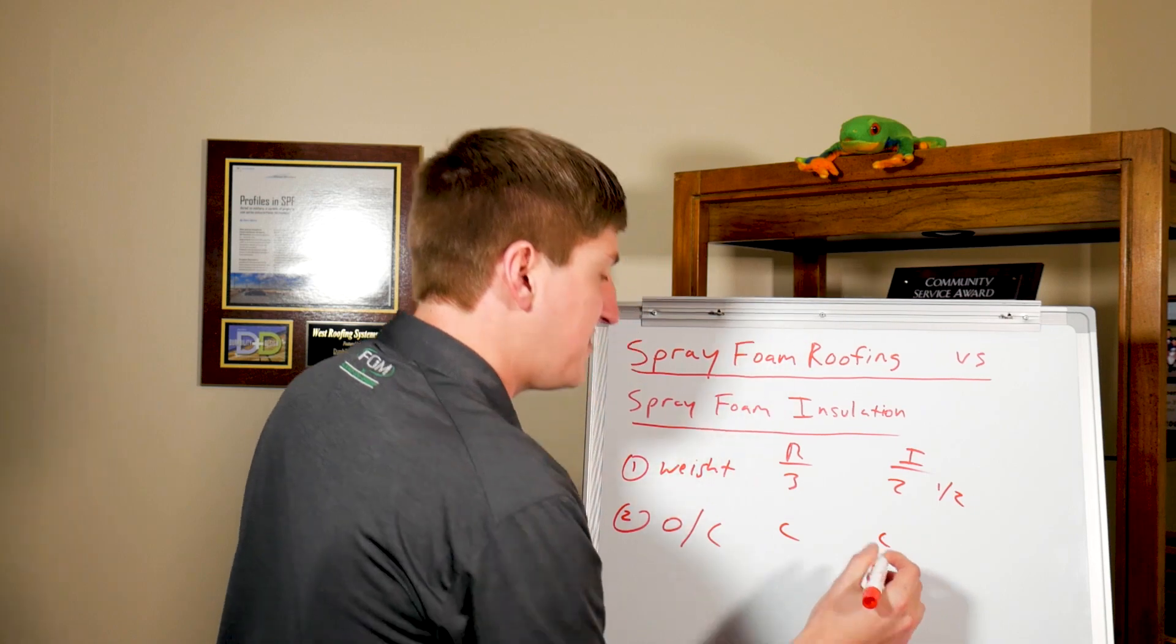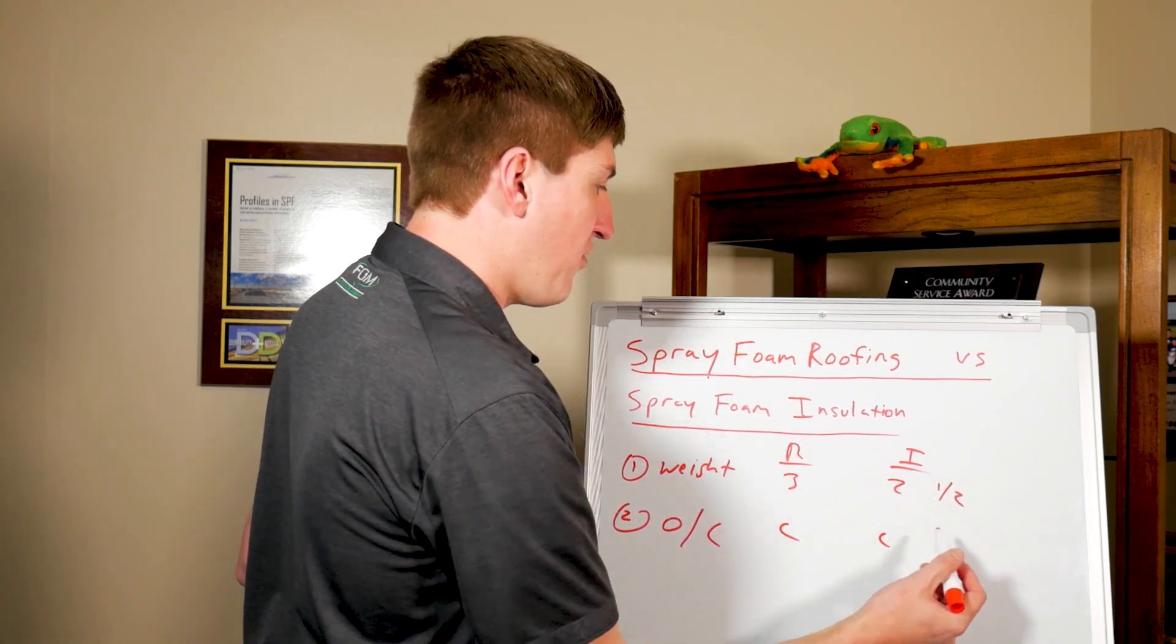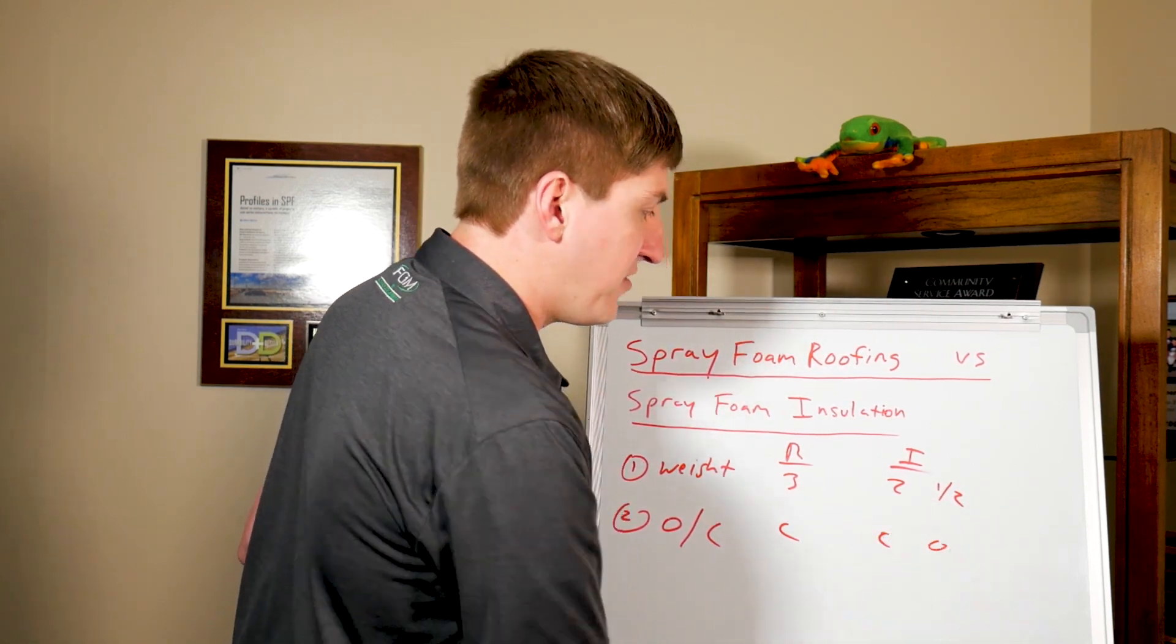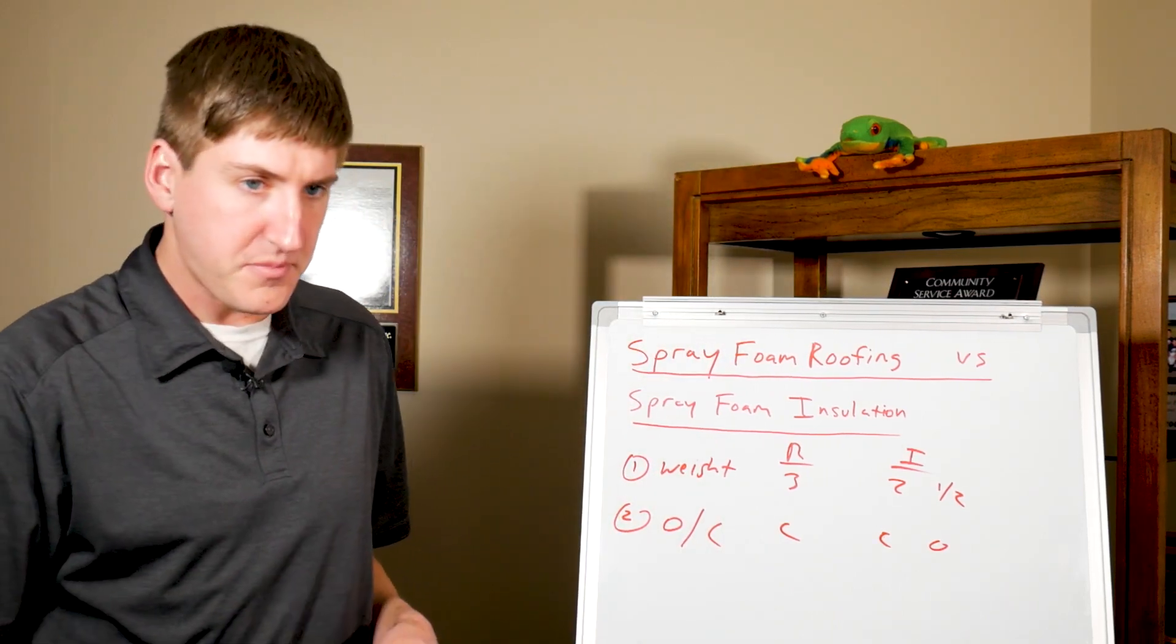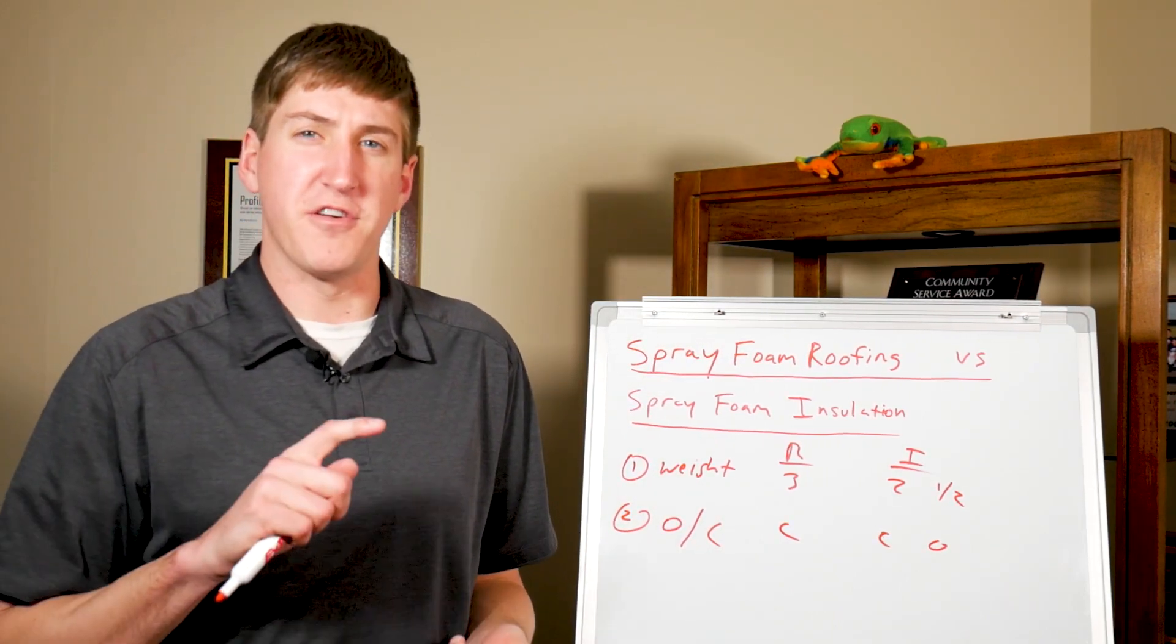In interior applications, they use two pound foam and half pound foam. Two pound is closed and half pound is open cell. Really the difference is how they create their R value.